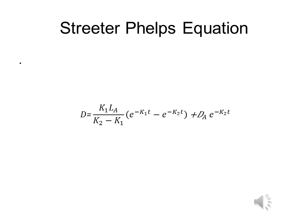All of that is then multiplied by E, the exponential to the power of minus K1, the deoxygenation rate multiplied by T time. Then we take away E, exponential to the power of minus K2, the reaeration rate, by T time.